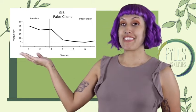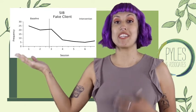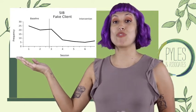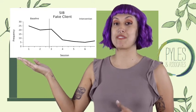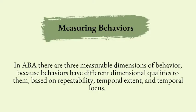This data can also provide clinicians with proof that an intervention is effective by observing changes seen in a graph. For example, with SIB we might see an increase at the start, and then a decrease once the intervention is implemented. In ABA, there are three measurable dimensions of behavior based on either repeatability, temporal extent, or temporal locus.